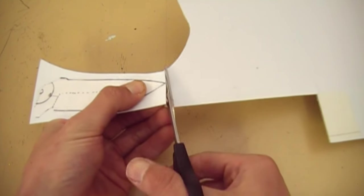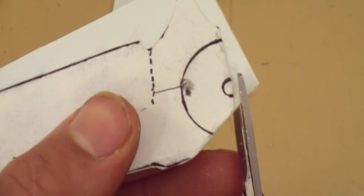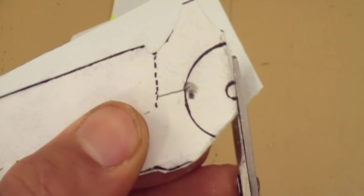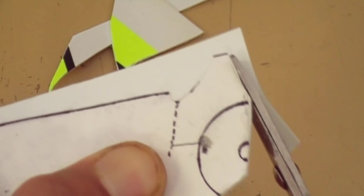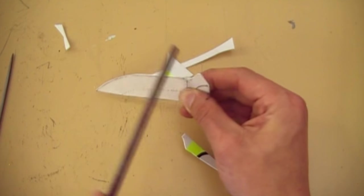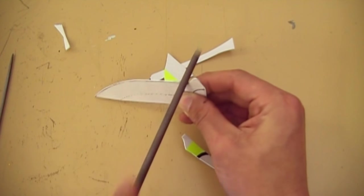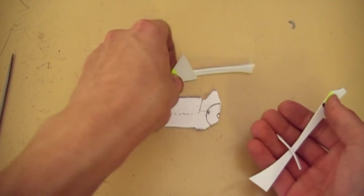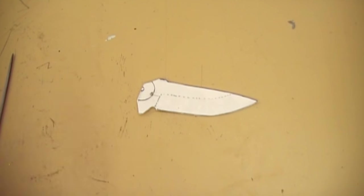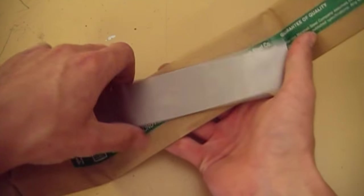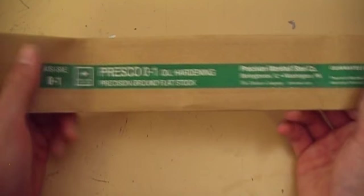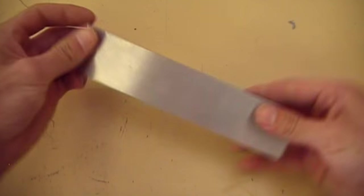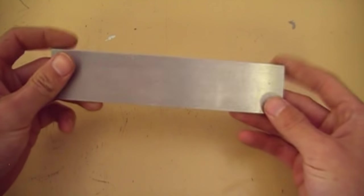Here I'm gluing my paper template onto a plastic garage sale sign. I'm using some leftover 5/32 inch thick 01 tool steel from my first knife.